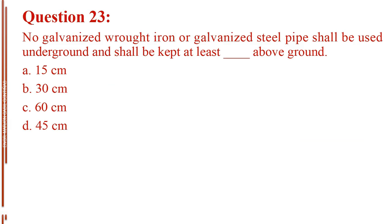Question number 23. No galvanized wrought iron or galvanized steel pipe shall be used underground and shall be kept at least blank above ground. Letter A, 15 cm. Letter B, 30 cm. Letter C, 60 cm. Letter D, 45 cm.